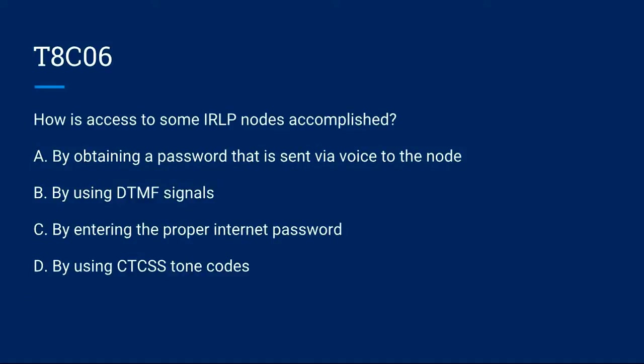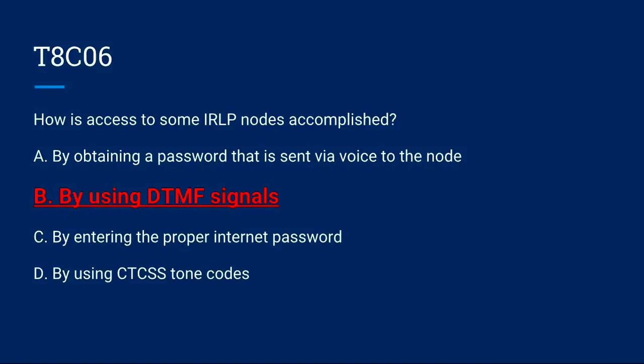T8C06: How is access to some IRLP nodes accomplished? A. By obtaining a password that is sent via voice to the node. B. By using DTMF signals. C. By entering the proper internet password. Or D. By using CTCSS tones. The correct answer is B: by using DTMF signals.